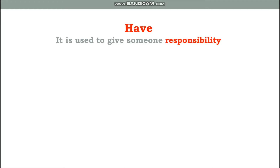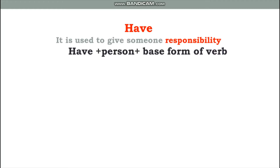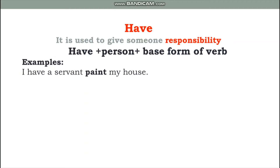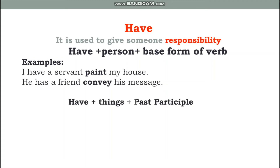The next causative verb is 'have.' Have is used to give someone responsibility. With a person, 'have' is used with the base form of the verb. For example: 'I have a servant paint my house' — 'paint' is the base form here, not a participle, even though it looks like one. 'He has a friend convey his message.' With a thing, 'have' is used with the past participle.